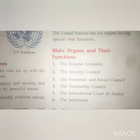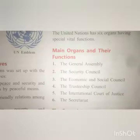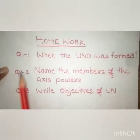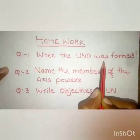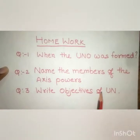I hope this lecture is clear to you all. We studied that the United Nations Organization was formed on 24th October 1945 to prevent future wars. Its headquarters are in New York, and it was named by Franklin D. Roosevelt, the President of the USA. Your homework: Question 1 — When was the UNO formed? Question 2 — Name the members of the Axis Power. Question 3 — Write the objectives of the UN. Please do this homework and send it to my email. Thank you.